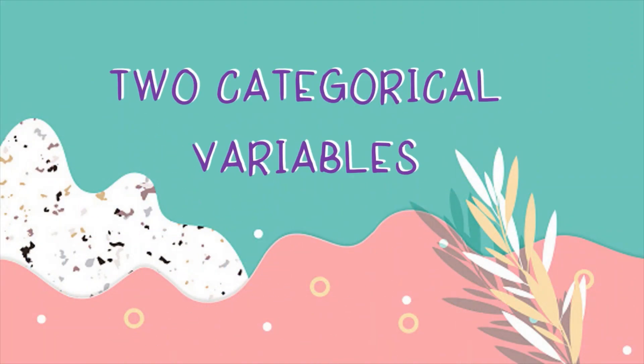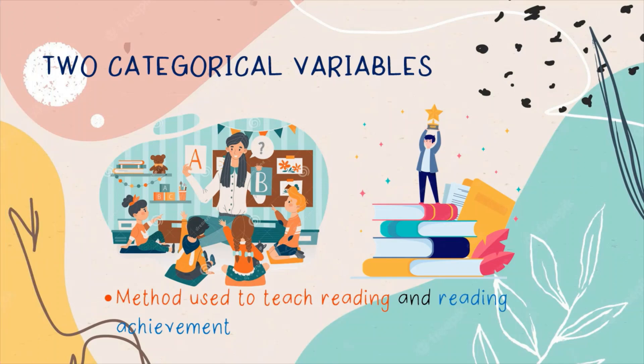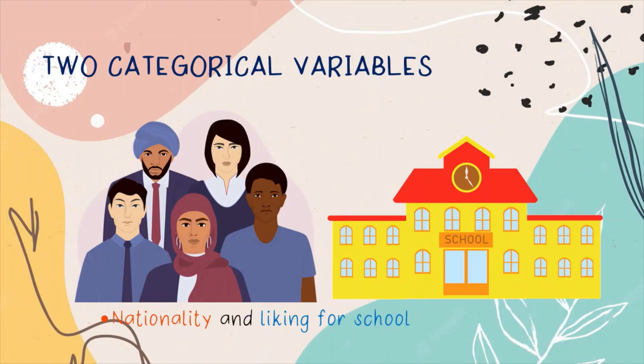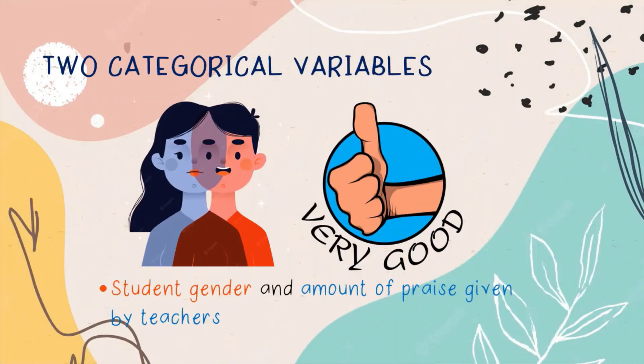Two categorical variables — examples are: method used to teach reading and reading achievement; counseling approach and level of anxiety; nationality and liking for school; student gender and amount of praise given by teachers.